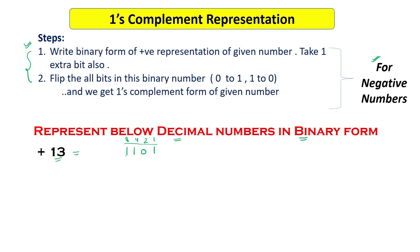We have to put one extra bit at the MSB position. Whenever the number is positive, we put 0 here. So the complete representation of +13 is 01101. This is the way to represent a positive number in one's complement.